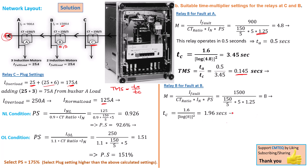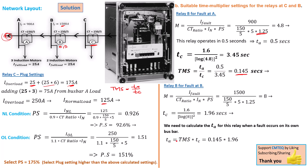Now we can find the value of TA for relay B for a fault on its own bus bar. Rearranging the TMS formula gives TA = TMS × TC. Using the previously calculated TMS = 0.145 and the new TC = 1.96, this gives TA = 0.284 seconds. We have now completed the calculation for relay B — covering the fault on bus bar A and the fault on bus bar B. Next, we need to repeat the same calculation for relay C, to handle the fault on bus bar B.